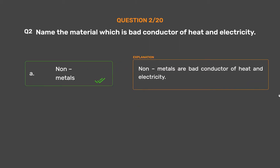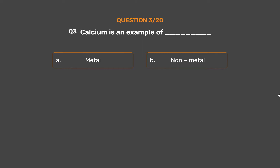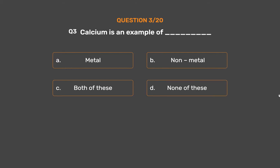Non-metals are bad conductors of heat and electricity. Question number 3. Calcium is an example of ___. Option A: Metal. Option B: Non-metals. Option C: Both of these. Option D: None of these.